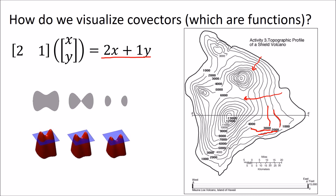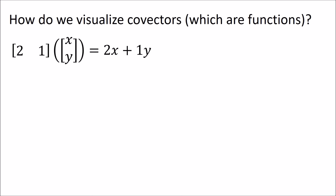Another way of thinking about this: if we have a red mountain here, if we take a horizontal slice at some height we'll get contours that look different. Slicing at different elevations gives different contours, and these are like the curves of constant height on a topographic map. So let's take this idea and apply it to the row vector 2, 1, which as a function of inputs x and y gives us the value 2x plus 1y.